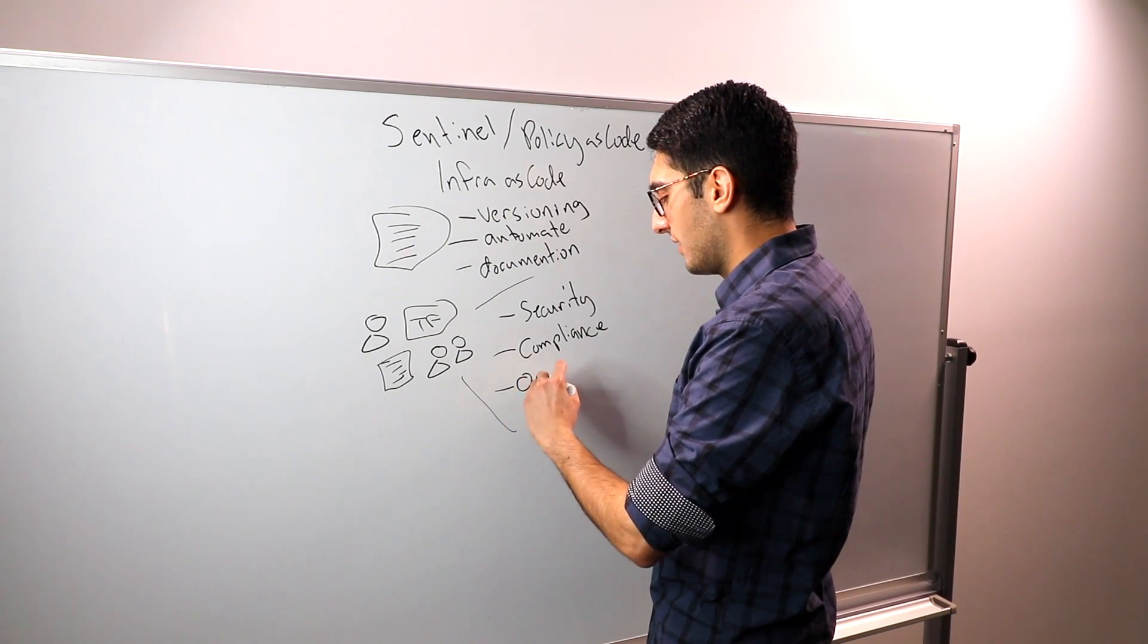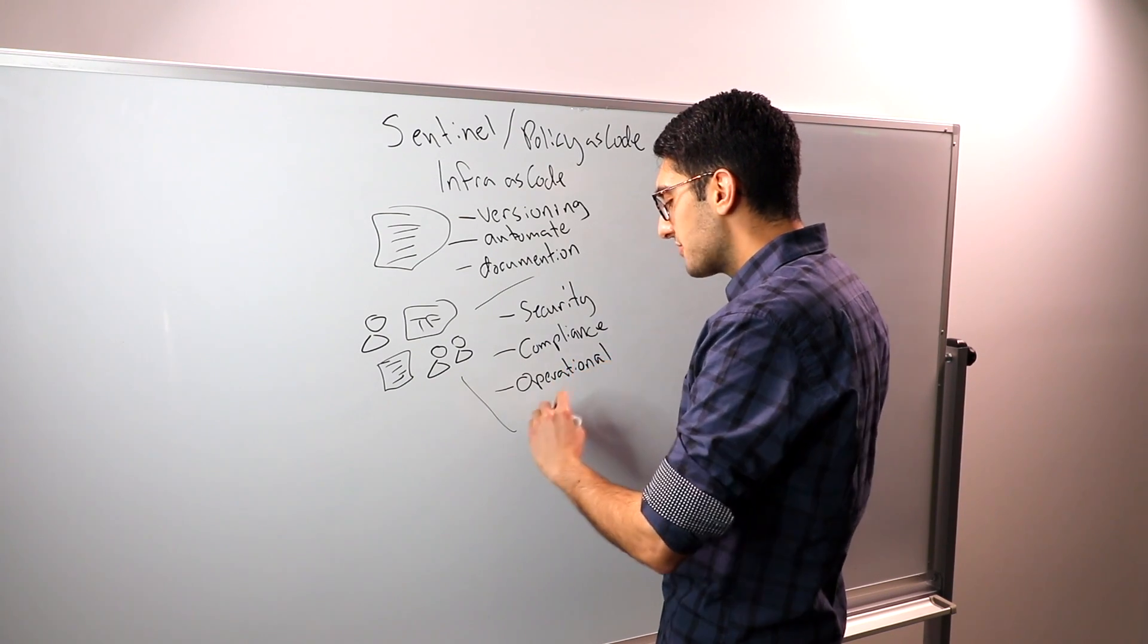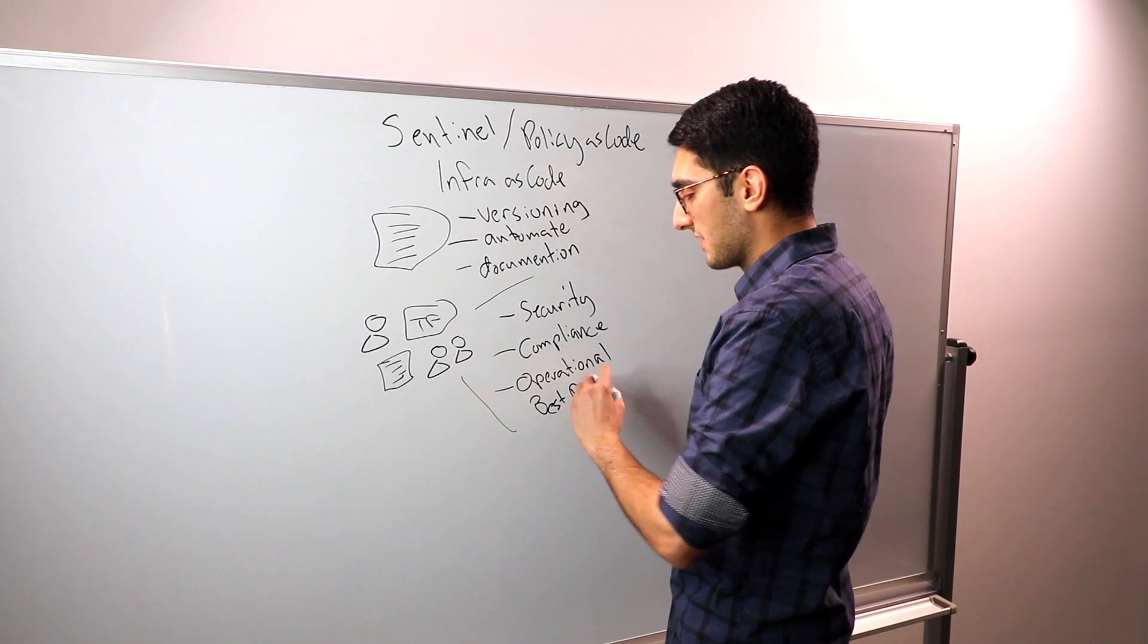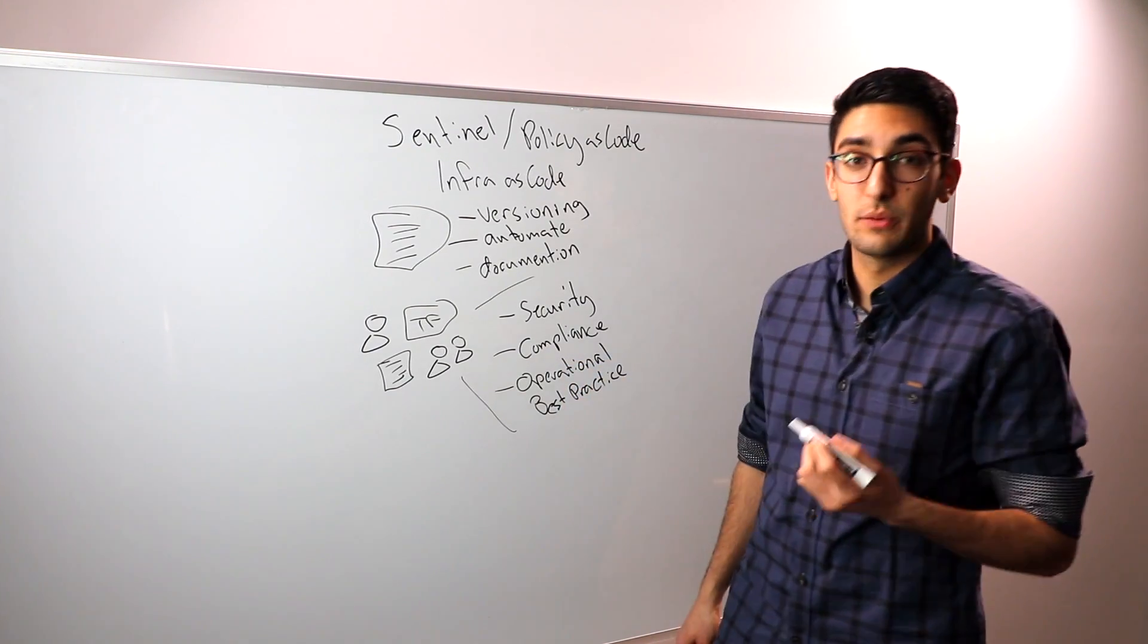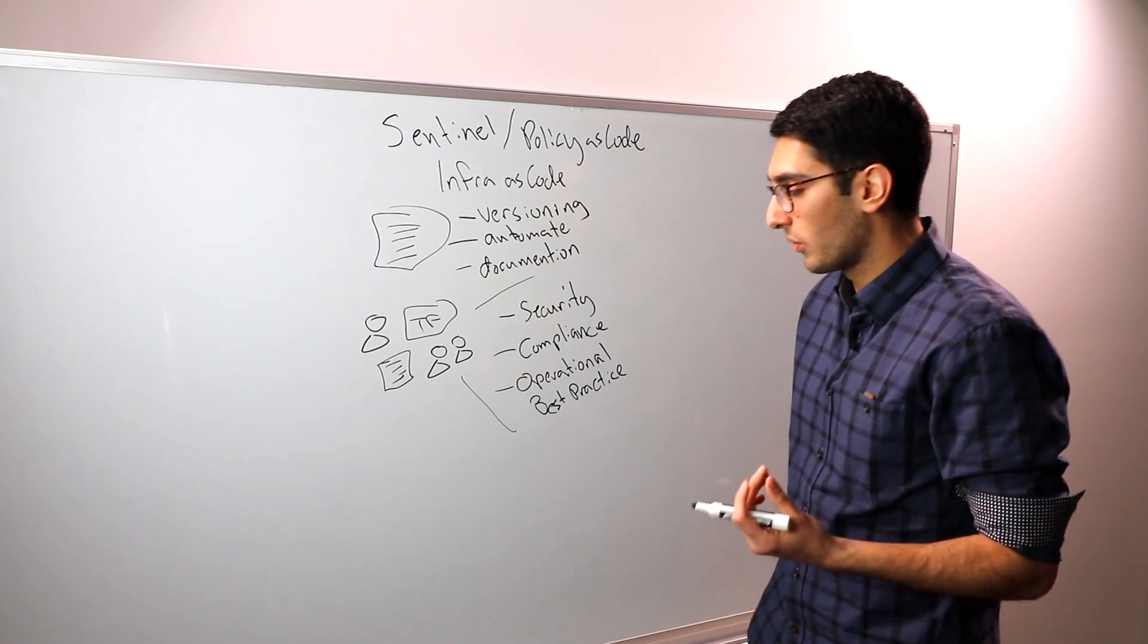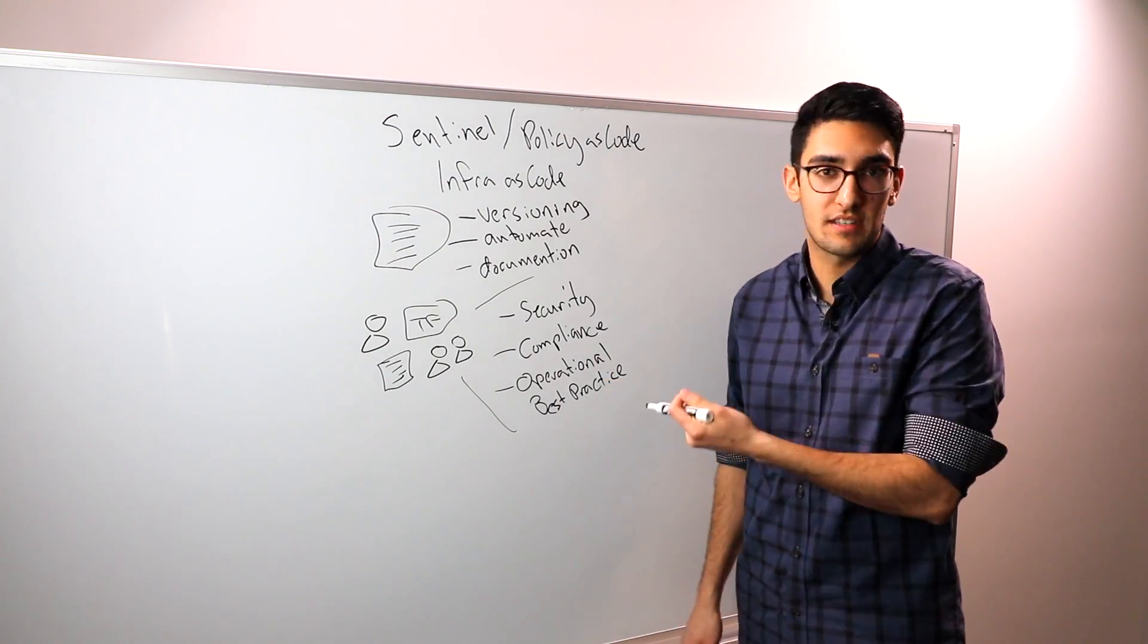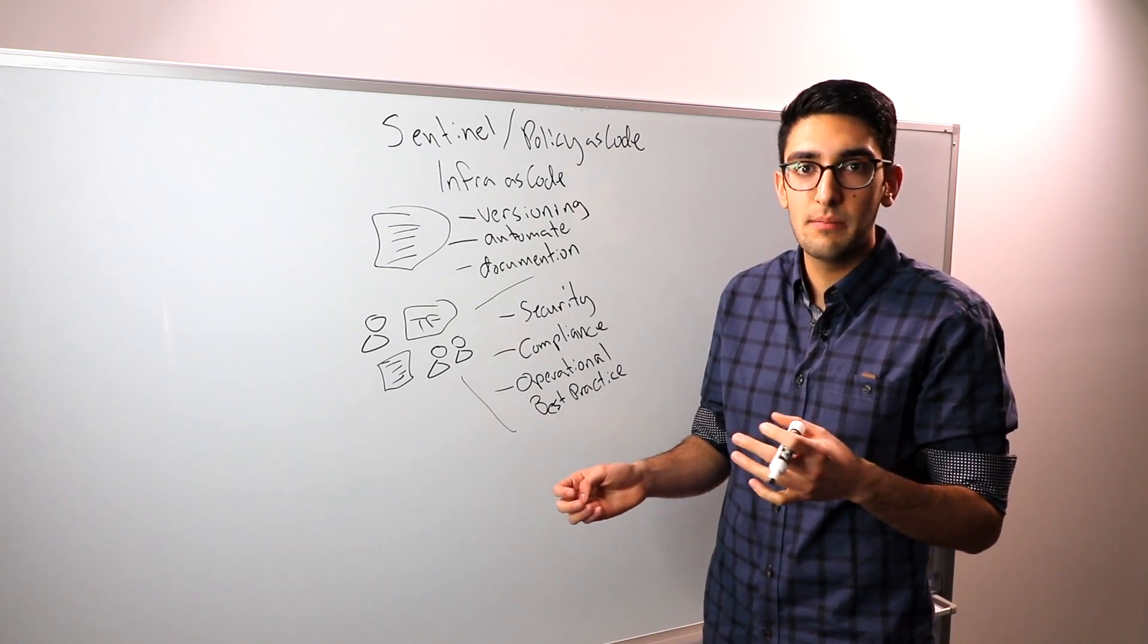Lastly, we have things like operational excellence, or operational best practice. These might be things that we're not legally required to do in the sense of compliance, but they're things that we learn over time or things that we should be doing. These can be a whole range of things. For example, if I'm deploying a service, instead of deploying only one instance of my service, I might want to deploy at least two at any given time.